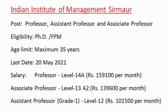Professor, Assistant Professor, and Associate Professor Post Vacancy in Indian Institute of Management, SIRMORE. Eligibility: PhD or FPM. Age limit: maximum 35 years. Last date for application: 20 May 2021. Salary: Professor Level 14A, Associate Professor Level 13A2, and Assistant Professor Level 12.